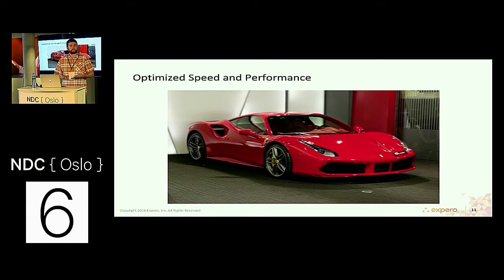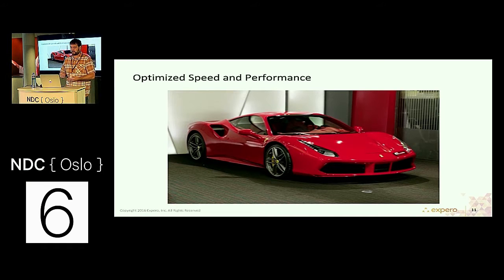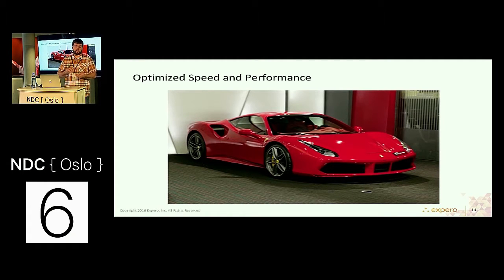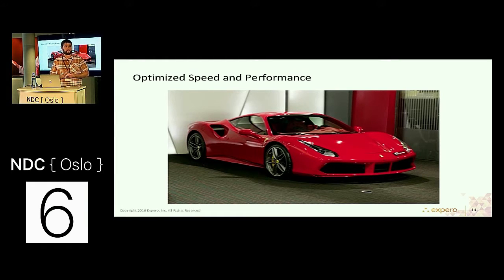gRPC is optimized for speed and performance. It has several things built in natively: natural message compression, flow control for message passing, and multiplexing of connections. In a REST-style architecture, if you need to make multiple requests you end up opening a connection, making a request, closing it, and repeating. With gRPC, you can have a long-running persistent connection over which you send multiple requests — possibly to different endpoints — across that single connection. This helps optimize speed, performance, and bandwidth, which is especially important for mobile applications.